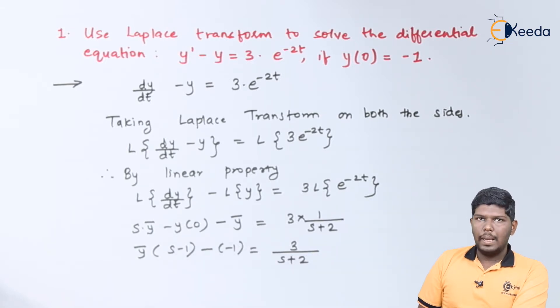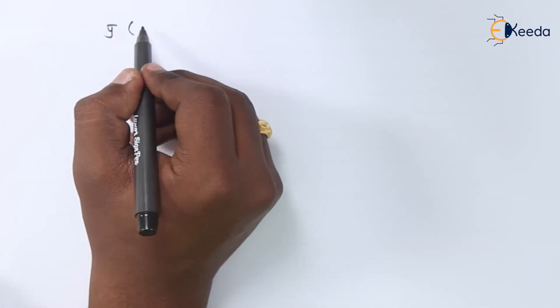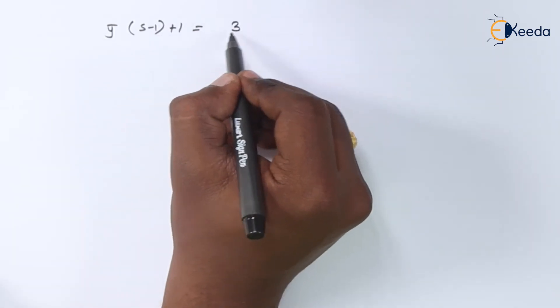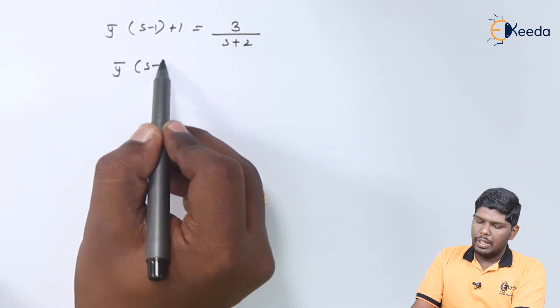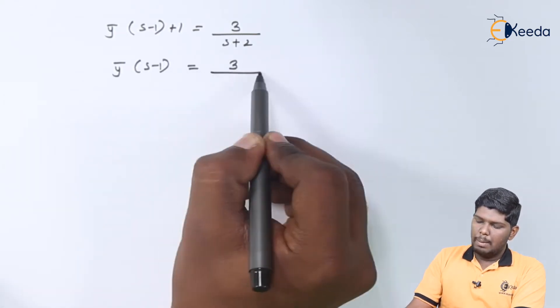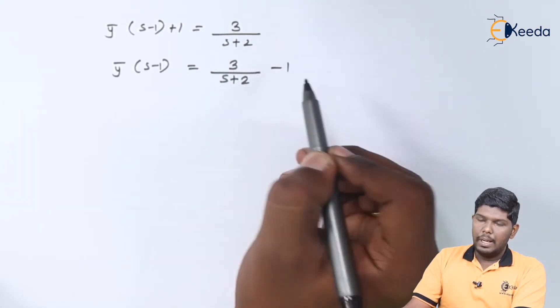Now here minus of minus will become plus 1. Taking this plus 1 on the right hand side, we will get y bar into s minus 1 is equal to 3 upon s plus 2 minus 1.